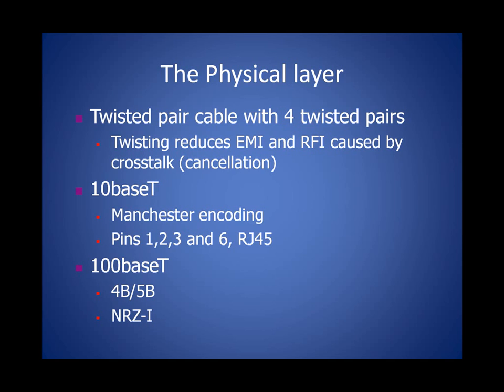10BaseT uses something called Manchester encoding to convey 1s and 0s in the electrical signal. 100BaseT shifts that to NRZ and also uses a modified 4B/5B encoding. The reason we use 4B/5B is that the clocks weren't up to the speed needed when we shifted to 100BaseT, so it's a transition to ensure we didn't lose synchronization on the NRZ encoding.